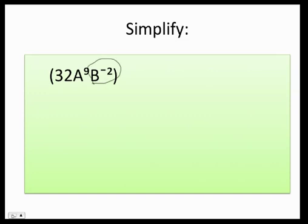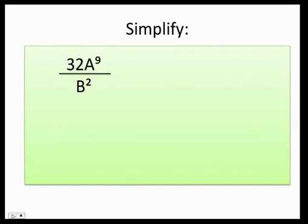So, what do I do? You always want to leave your answer with positive exponents. Therefore, this b to the negative 2 has to go to the bottom. Because remember, any time you move back and forward, the sign changes. And that's it. This is my final answer.